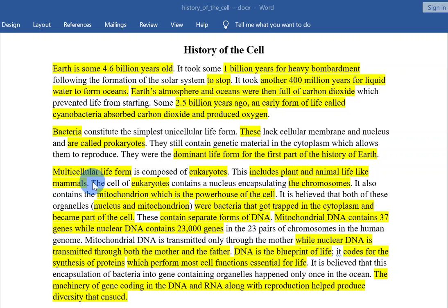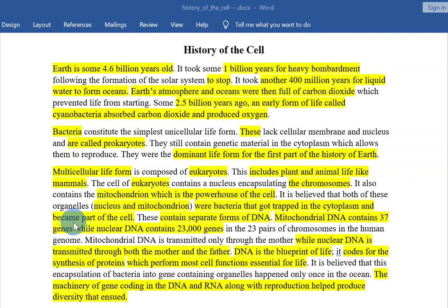Multicellular life forms are composed of eukaryotes. These include plant and animal life like mammals. The cell of eukaryotes contains a nucleus encapsulating the chromosomes. It also contains the mitochondrion, which is the powerhouse of the cell. It's believed that both of these organelles — nucleus and mitochondrion — were bacteria that got trapped in the cytoplasm and became part of the cell.